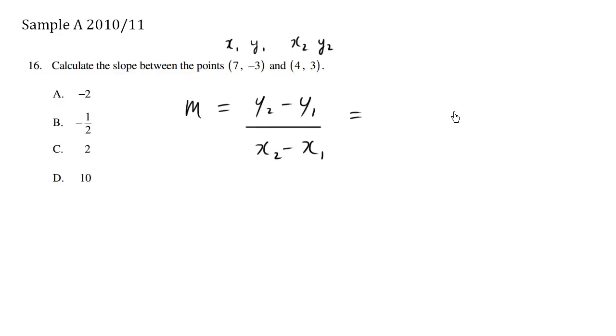So the slope is equal to y2, this here is my 3 minus and this is my y1, negative 3. Be careful when you have two negative signs, it ends up being positive. All over x2, which is 4, minus x1, which is minus 7.